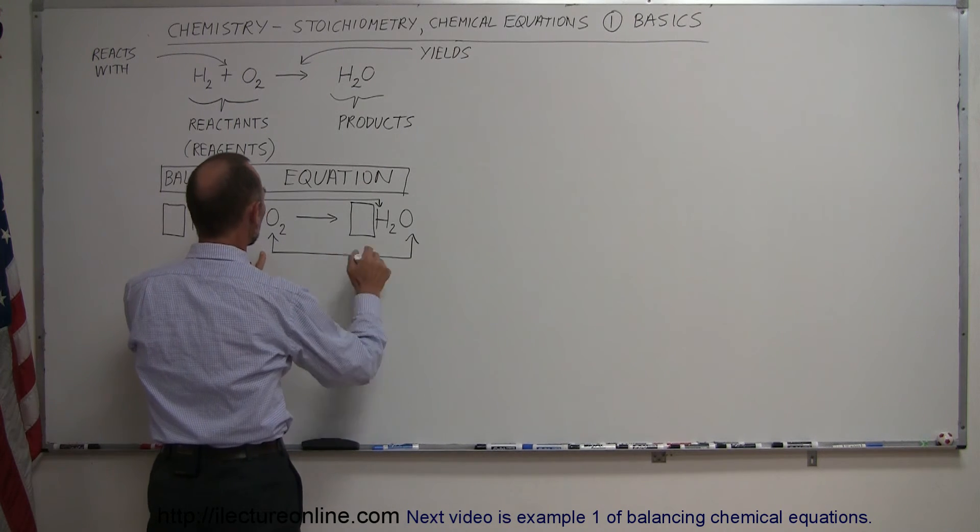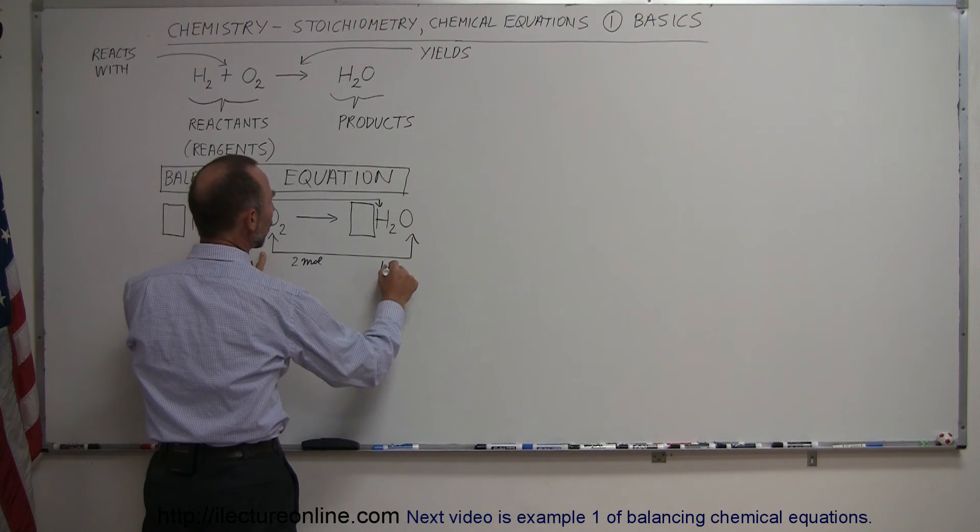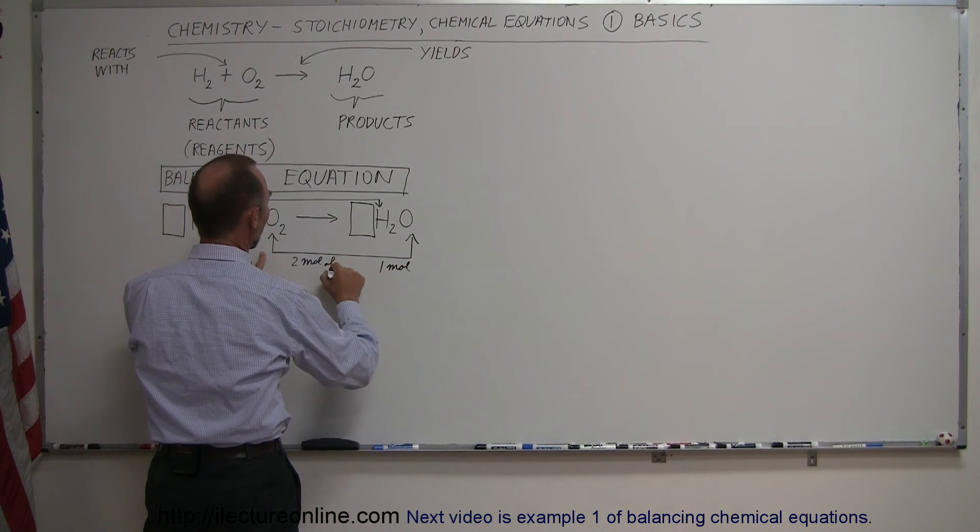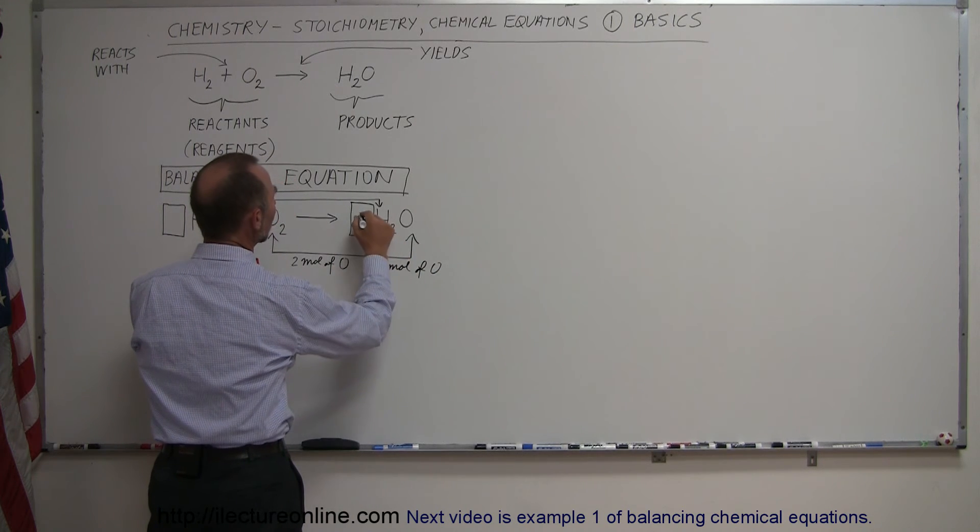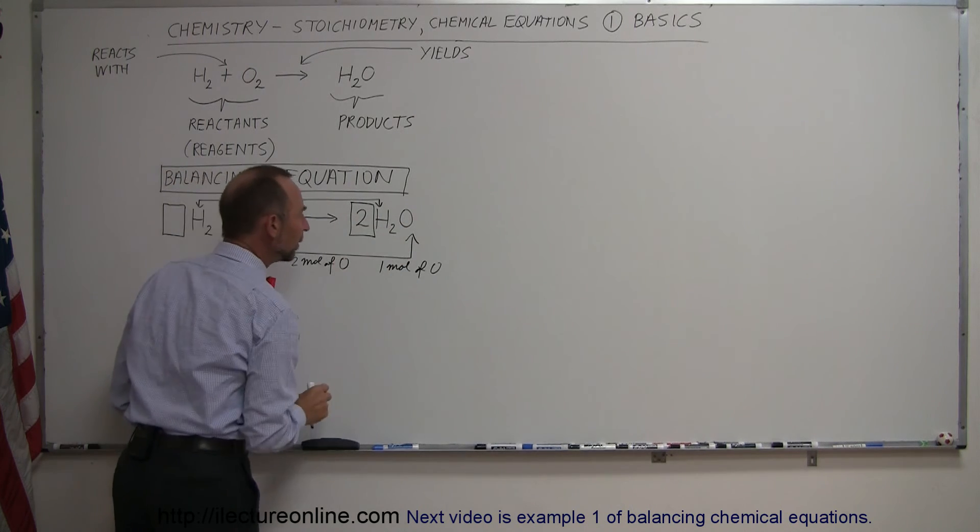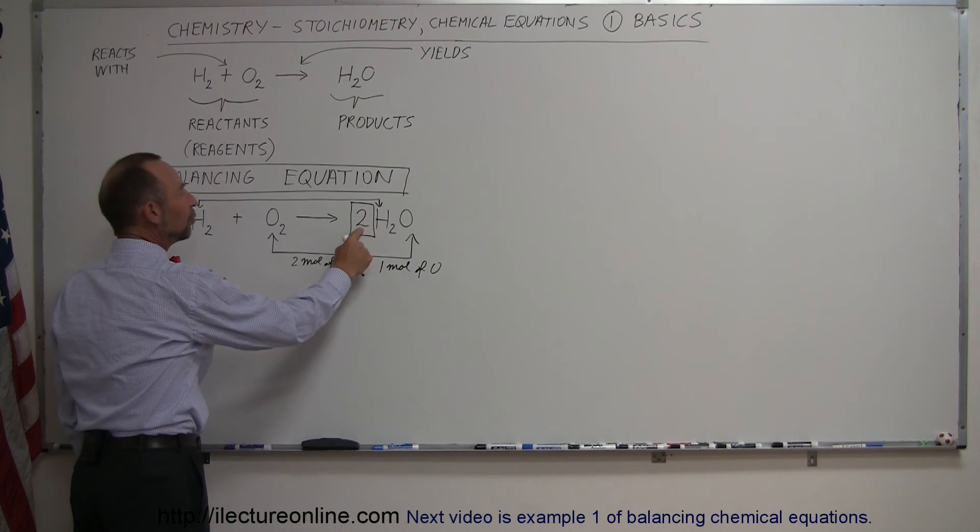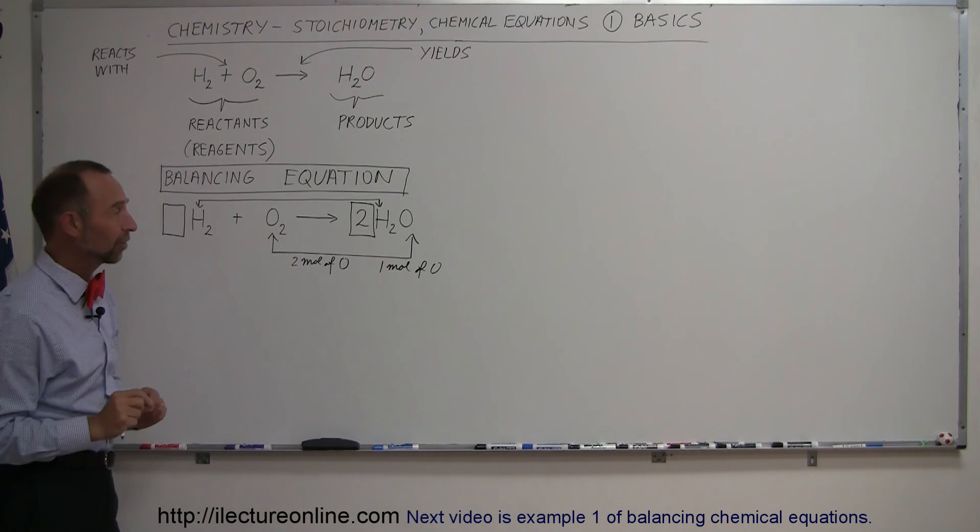So to balance these two, since we have two moles over here and only one mole of oxygen over here, we need to balance those two, so we can do that by multiplying this by two. So now if we have two moles of water, then we have two moles of oxygen, which balances the two moles of oxygen over here, so now we know that's balanced.